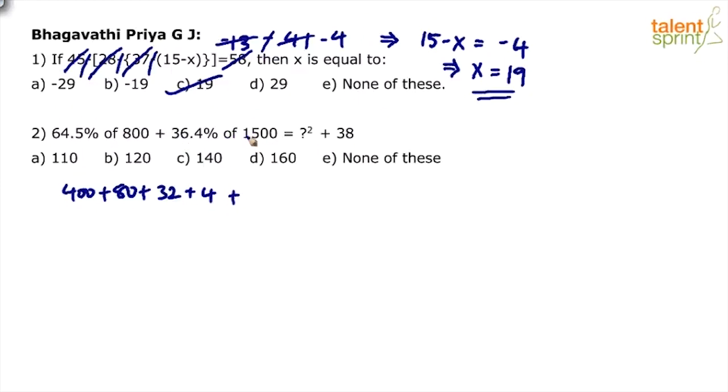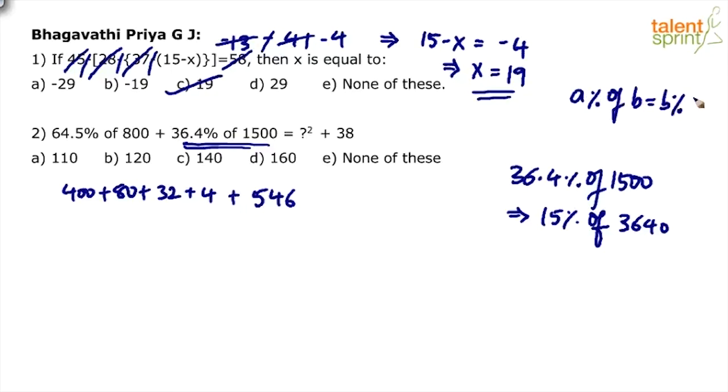Similarly, 36.4% of 1500. Or you can do it the other way: instead of taking 36.4% of 1500, take 15% of 3640. Both ways work. Remember, A% of B equals B% of A. I felt finding 36.4% of 1500 is complex compared to 15% of 3640, so I reversed it. 15% of 3640 is 10% plus 5%, so 364 plus 182, which is 546.